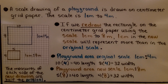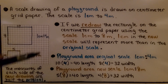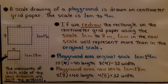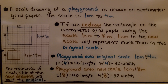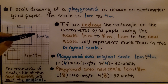A scale drawing of a playground is drawn on centimeter grid paper. The scale is one centimeter to four meters. If we redraw the rectangle on the centimeter grid paper using the new scale of one centimeter to eight meters, one centimeter in the new scale will represent more than in the original scale. The playground area at the original scale is one centimeter to four meters.